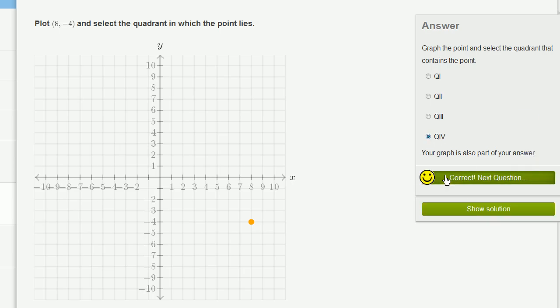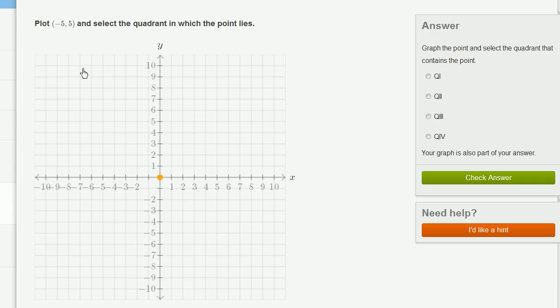Let's do one more of these. Hopefully we get a different quadrant. So we want to plot the point negative 5 comma 5. So now my x-coordinate is negative. It's negative 5. So I'm going to move to the left in the x-direction. So I go to negative 5.